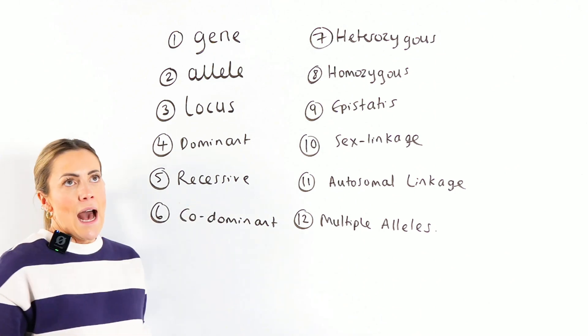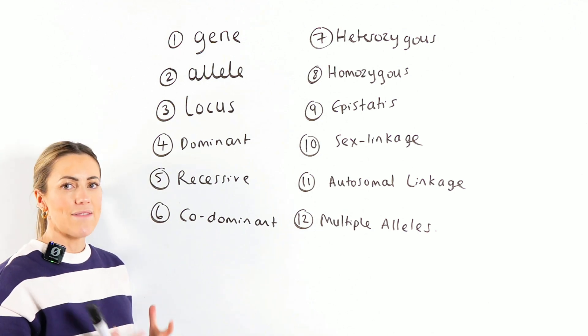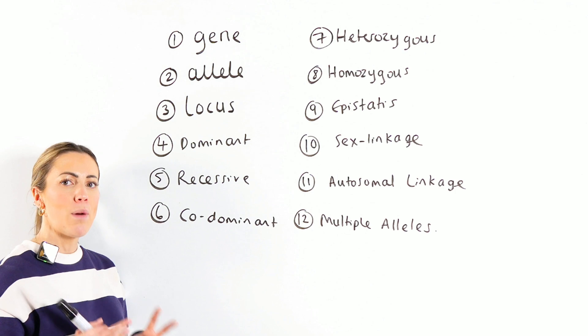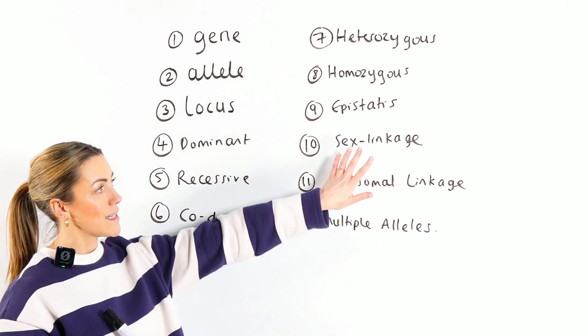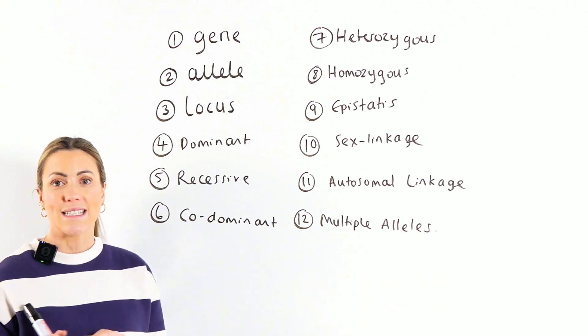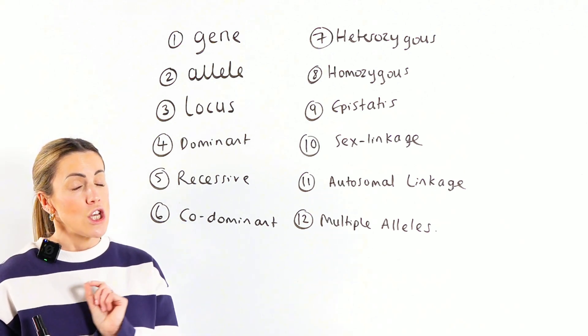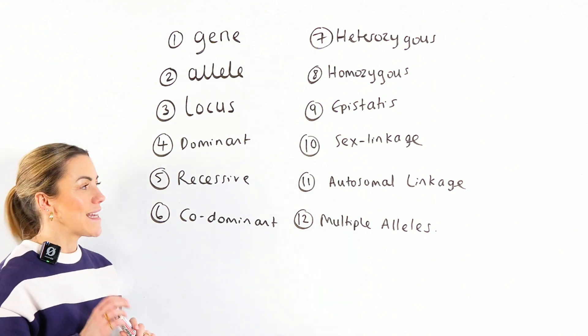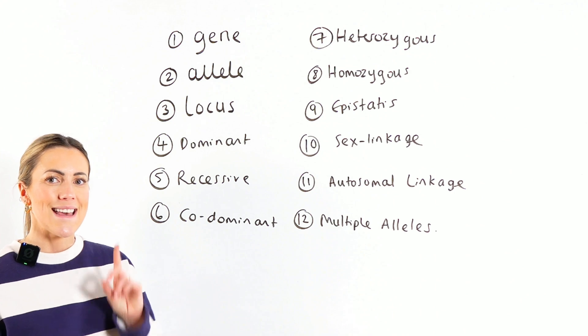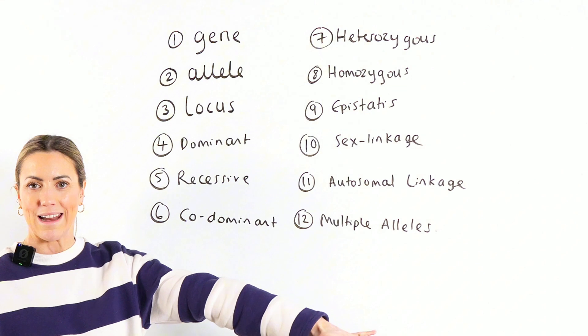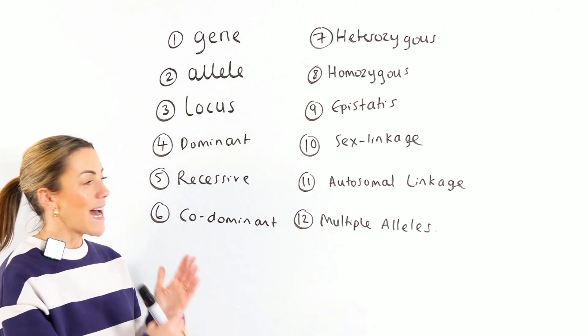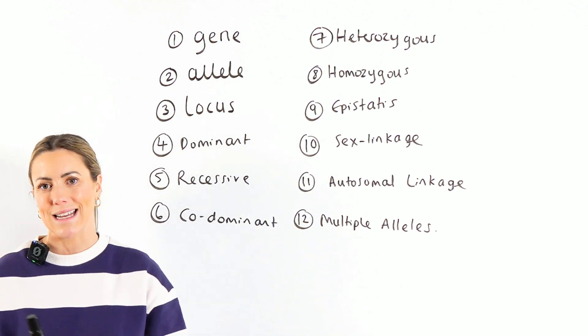Recessive, I used to say recessive alleles, you need two copies for them to be expressed. That kind of falls apart a little bit at A-level. Because when you start to look at sex-linked genes, you can have a recessive, sex-linked, recessive allele and a male would only need one copy of it. So we're not going to say that for A-level. For recessive, instead, we're going to say a recessive allele will only be expressed if there is no dominant allele. A recessive allele will only be expressed if there is no dominant allele. That definition is perfect because it even works with sex-linked genes.